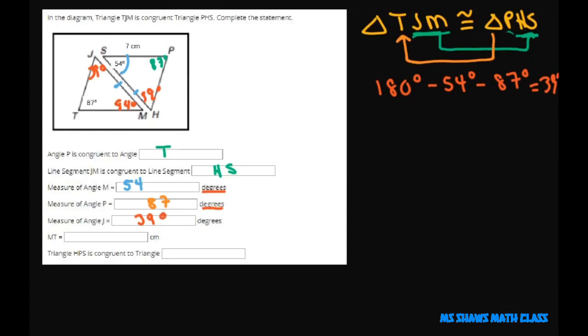And now we have measure MT. So MT is this one. Let me write this again. TJM is congruent to PHS, so I know MT is congruent to SP. SP is 7 centimeters, so that means MT is also 7 centimeters.